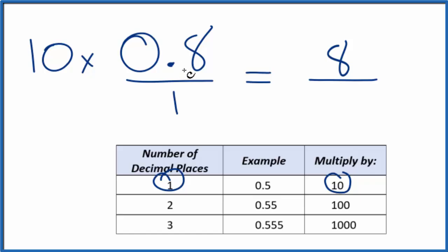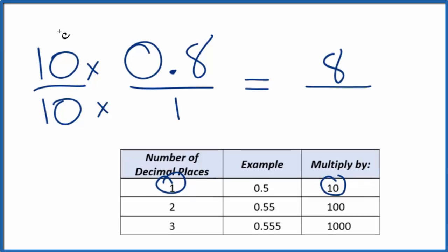But we can't just multiply by 10. That would change the value, the quantity here. So we need to multiply by 10 over 10. Because 10 over 10, that's just 1. So we're multiplying by 1.